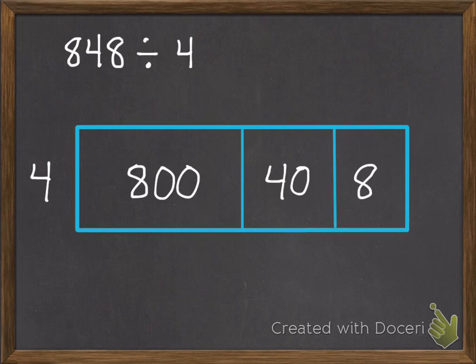So now we just divide each part. We'll start with our hundreds, 800 divided by 4. So 4 goes into 8 twice with 2 zeros, so 200. And we divide our tens, 40 divided by 4, which is 10. And our ones, 8 divided by 4, which is 2. And just like with our partial quotients, we're going to add all of those together. 200 plus 10 plus 2, which equals 212.